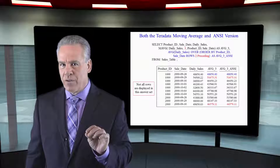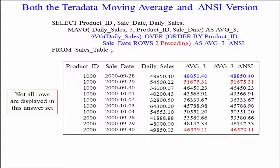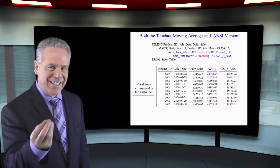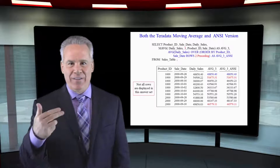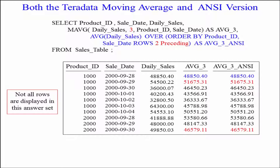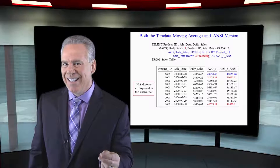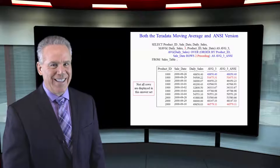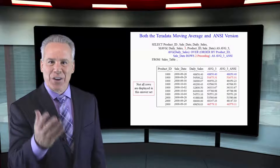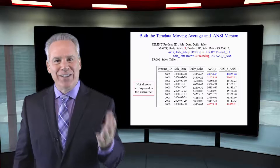Let's look at our Teradata version. We had the moving average of daily sales every three rows — a moving window of three — after we sort by product ID and sale date. We can easily do this in the ANSI version. It's not moving average; it's average of daily sales over order by product ID and sale date, rows 2 preceding. That's a moving window of three — the current row and the previous two.